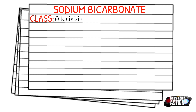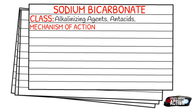How does it work in the body? Sodium bicarb is a very weak base, so it increases the blood and the urinary pH level, making them a little more alkalotic or basic. And this neutralizes the hydrogen ion concentrations.